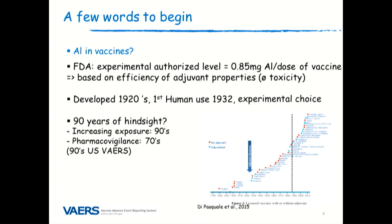If we want to have good knowledge of adverse effects, we need a strong pharmacovigilance system. In France, the pharmacovigilance system was born in the 1970s — so this is not 80 years of insight. The US Vaccine Adverse Event Reporting System was born in the 1990s, so the same reflection applies. It is officially admitted that only 1 to 10% of adverse effects related to vaccination are actually reported. I am convinced that this argument is not a good argument in favor of aluminum safety.